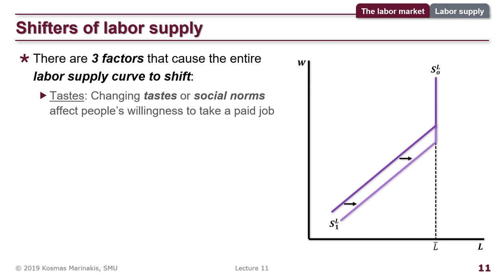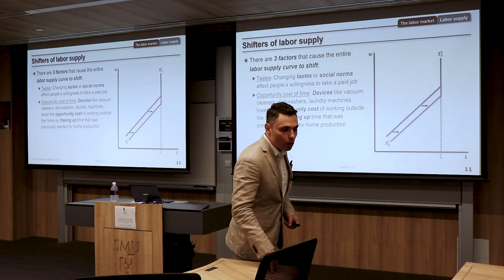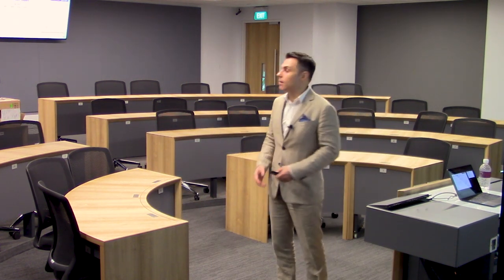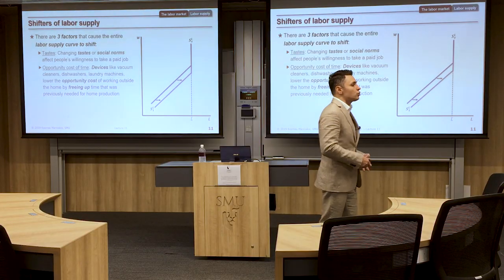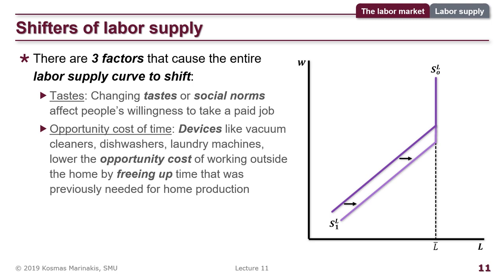A second shifter of labor supply is the opportunity cost of time. The invention of devices like vacuum cleaners, dishwashers, and laundry machines lowered the opportunity cost of working outside the home by freeing up time previously dedicated to home production. Before these machines, one family member had to dedicate an entire day to home production.